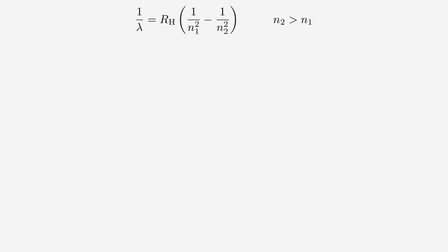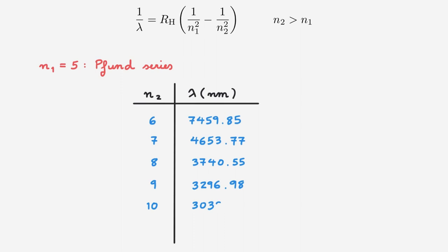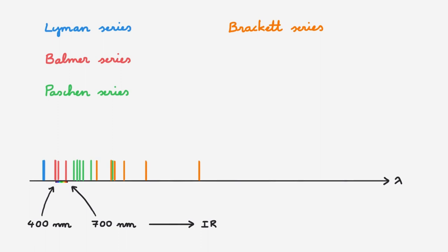The next spectral series corresponds to N1 equals 5, and it's called the Pfund series, named after August Pfund, who discovered it in 1924. Filling it up in the usual way and going back to the plot of the electromagnetic spectrum with the usual zoom out, the Pfund series starts at around 7,460 nanometers and terminates at around 2,279 nanometers. This places the entire Pfund series within the infrared region of the electromagnetic spectrum, and we see that it overlaps with the previous series.